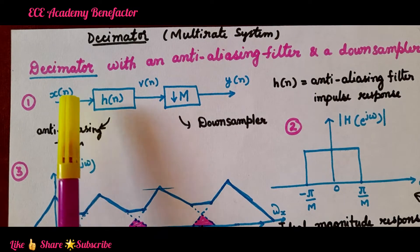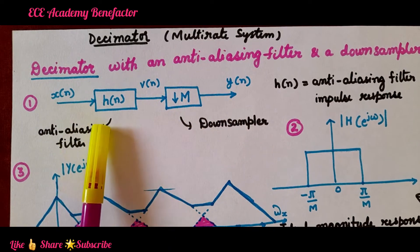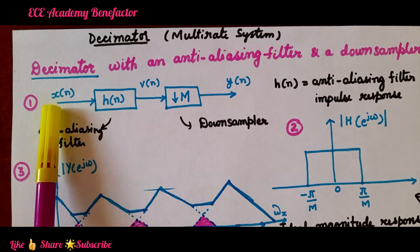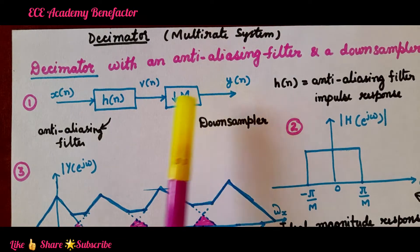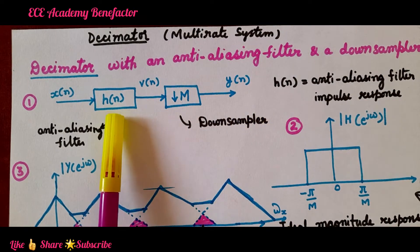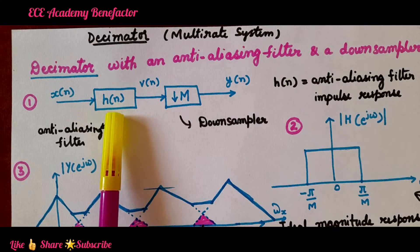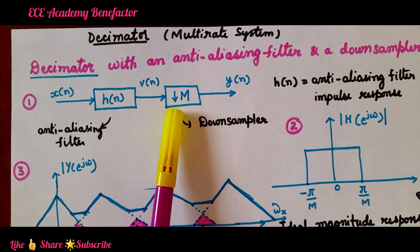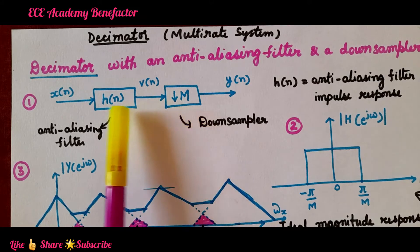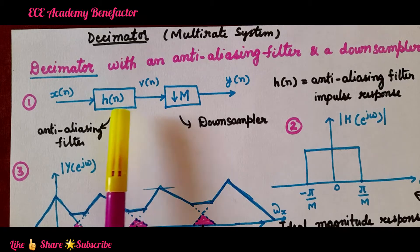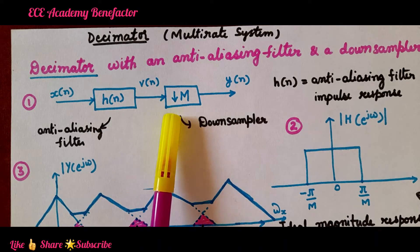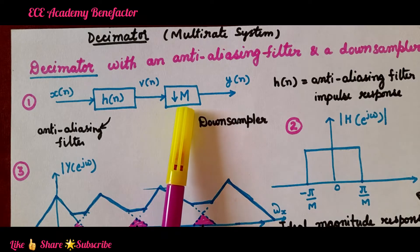Here the block diagram of the decimator is drawn. x of n is the input and y of n is the output. The decimator comprises an anti-aliasing filter with impulse response h of n, together with a down sampler. The down sampling is by a factor of capital M.